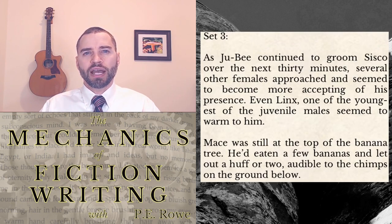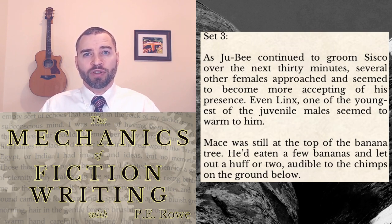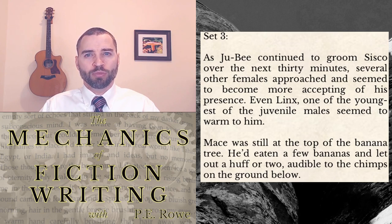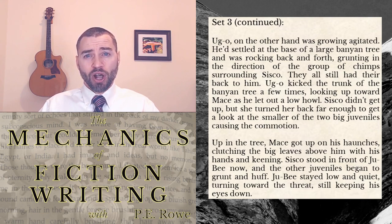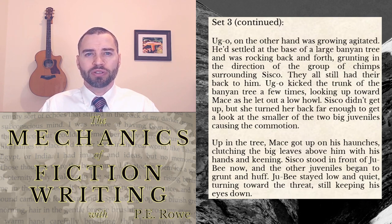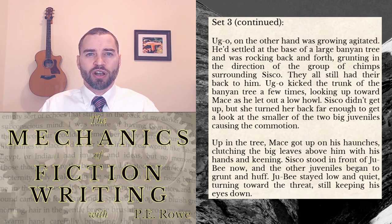Set 3. As Juby continued to groom Sisko over the next 30 minutes, several other females approached and seemed to become more accepting of his presence. Even Lynx, one of the youngest juvenile males, seemed to warm to him. Mace was still at the top of the banana tree — he'd eaten a few bananas and let out a huff or two, audible to the chimps on the ground below. Uggo, on the other hand, was growing agitated. He'd settled at the base of a large banyan tree and was rocking back and forth, grunting in the direction of the group of chimps surrounding Sisko. They all still had their back to him. Uggo kicked the trunk of the banyan tree a few times, looking up toward Mace as he let out a low howl.